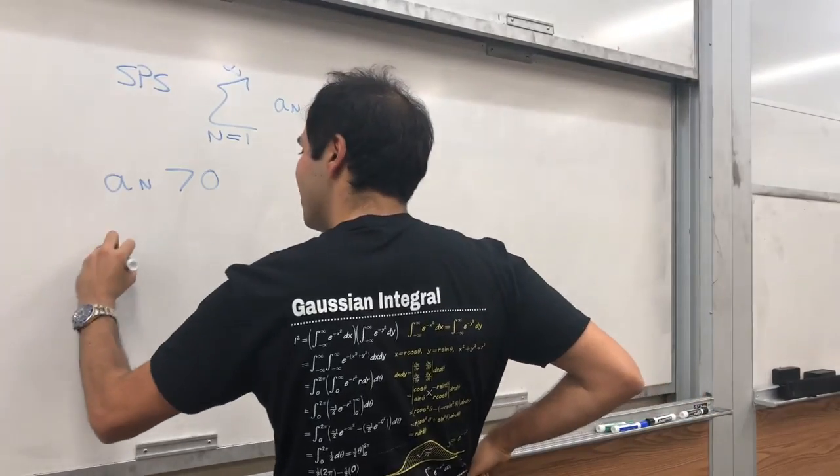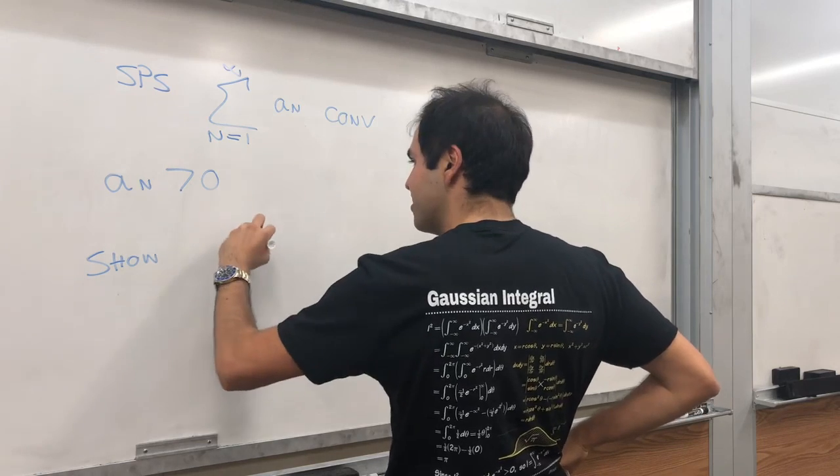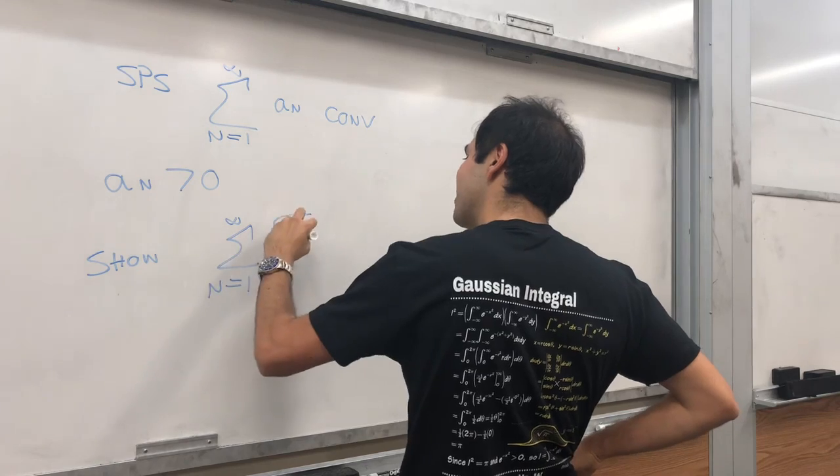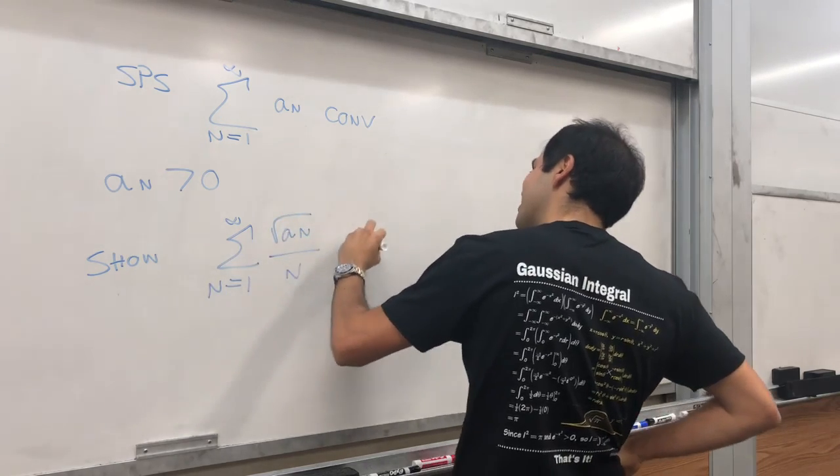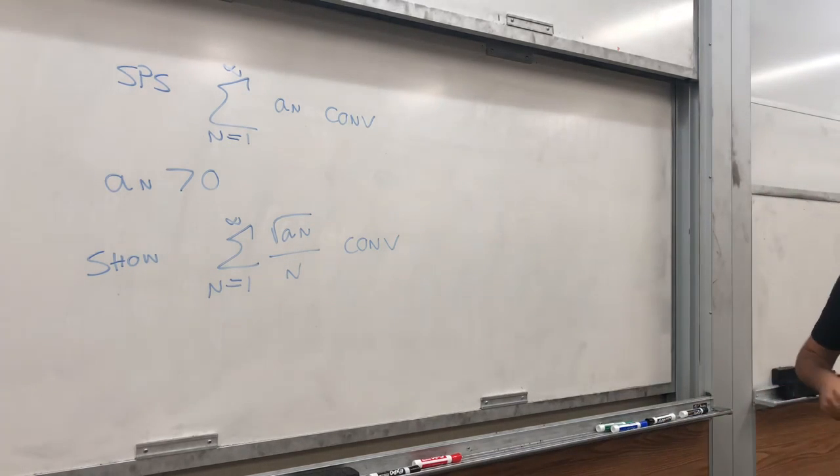And show, let me think, the following series converges. Sum from one to infinity of square root a_n over n converges. Comparison test. How?